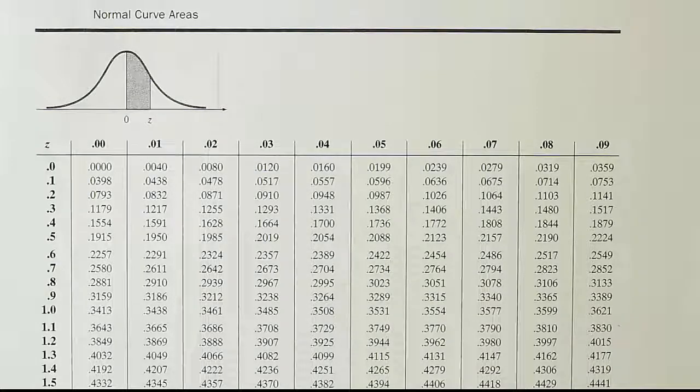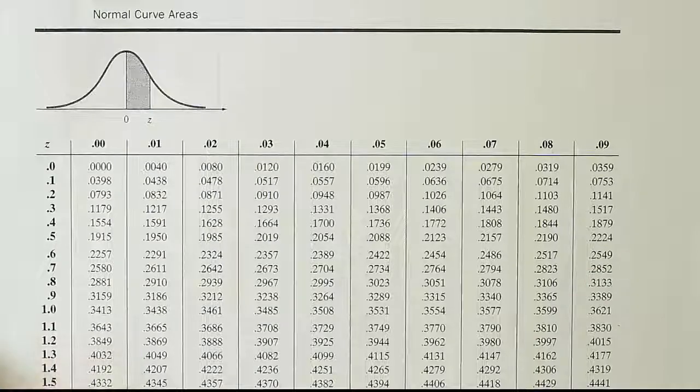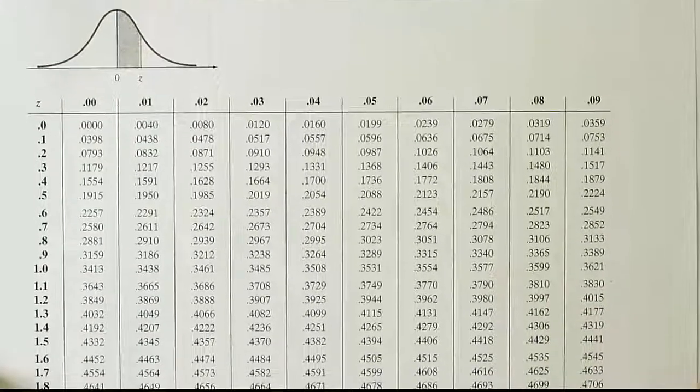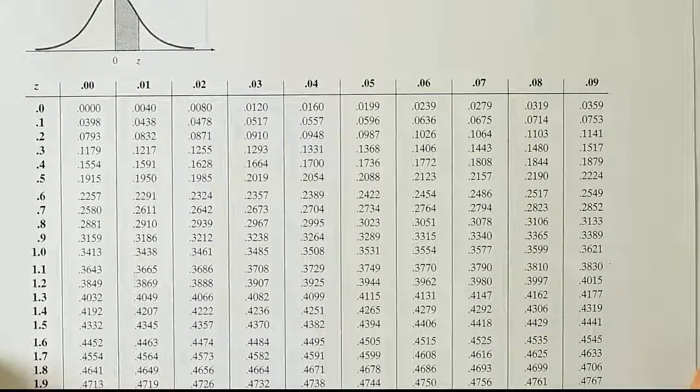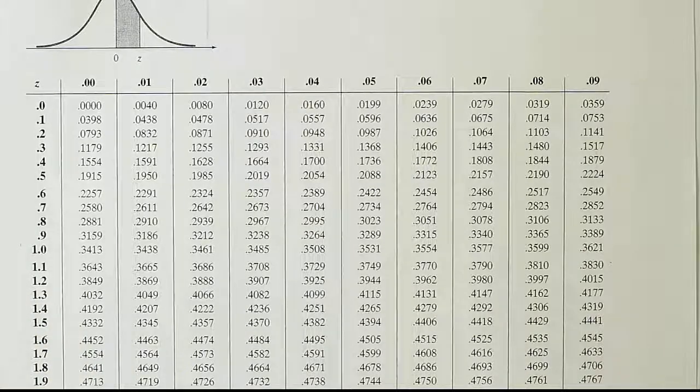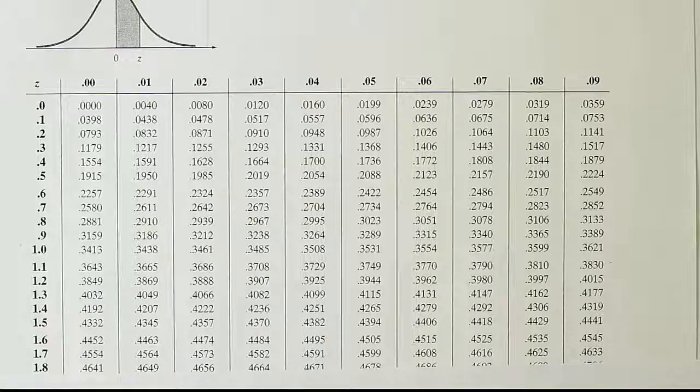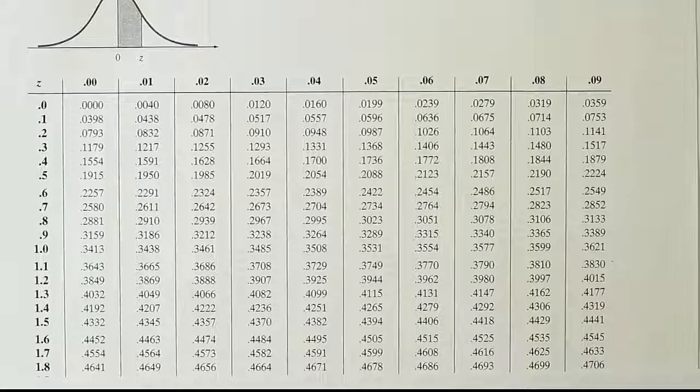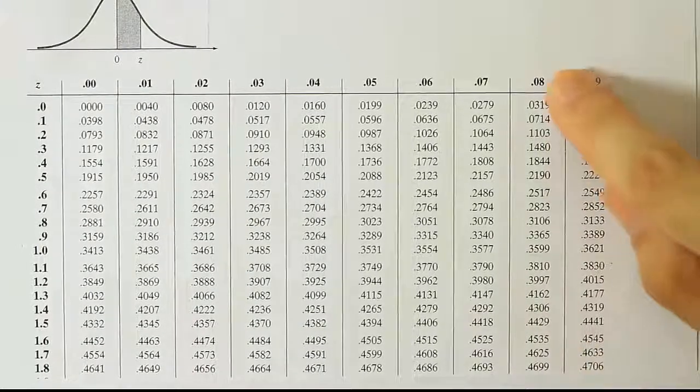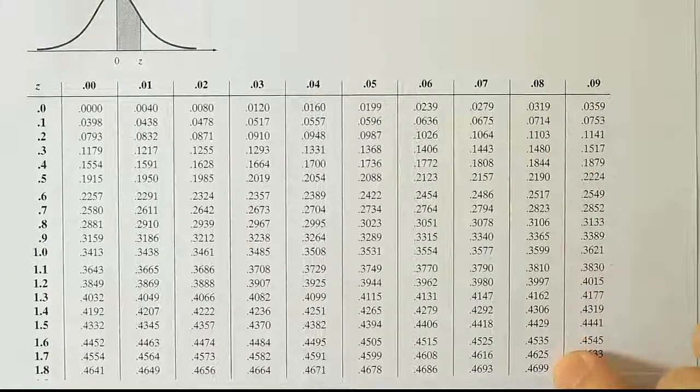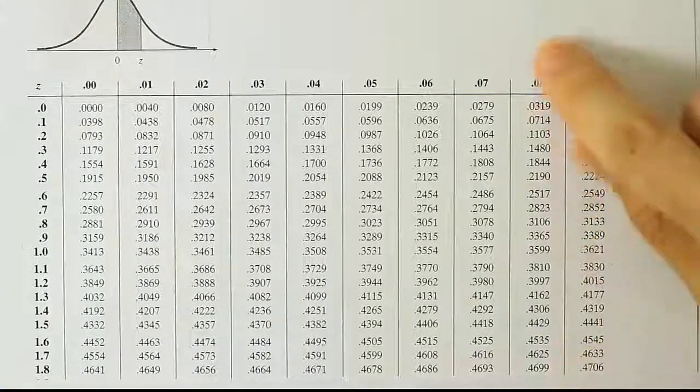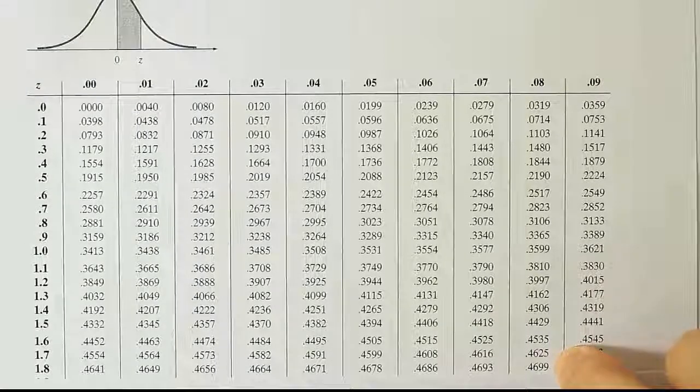Okay, so we have to find 1.88 on the curve. So we're going to move this table up a little bit until we see the 1.8 row. There's the 1.8 and the 1.9 row. And we want to go to 1.88. So we actually need to go to the next to last position there. That would be this value here in the 0.08 column. So 1.88 gives you the value 0.4699.